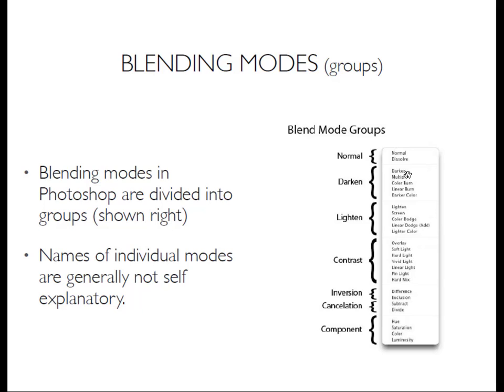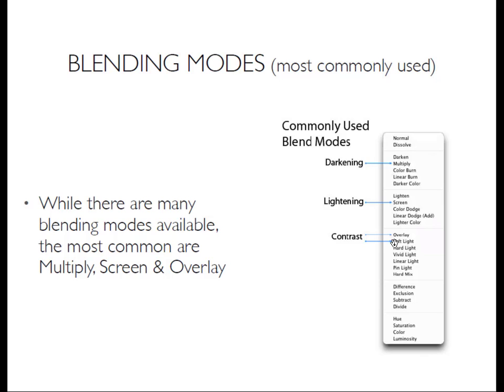Today we're going to focus mostly on multiply, lighten and screen, overlay, soft light, and luminosity. We're not going to go through every one of them. Just like the presets from last class, darkened, multiply, and color burn will all have great emphasis on the dark colors, but ultimately you'll have to experiment with them to understand what they do. If you actually Google what the different blending modes do, it gives you a mathematical formula — you can't compute that in your head, so it'll be good to play with them during the homework assignment. These are the most commonly used blending modes.